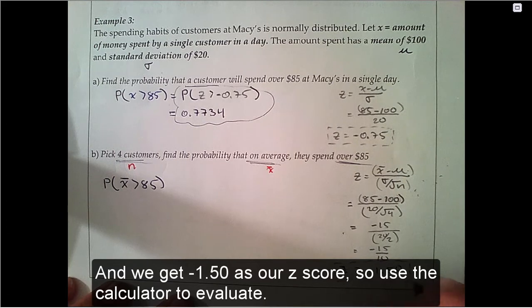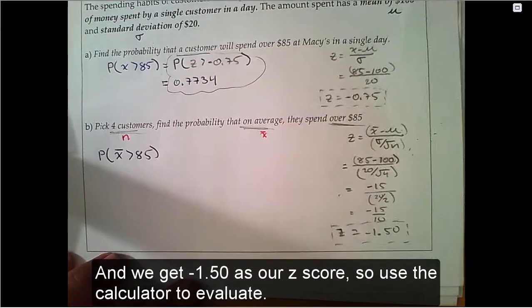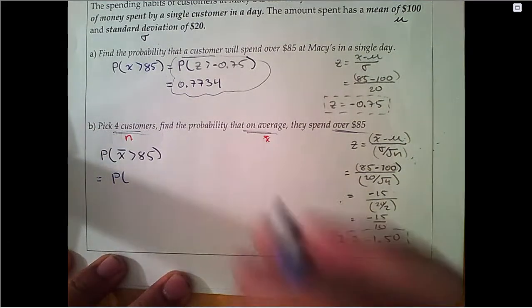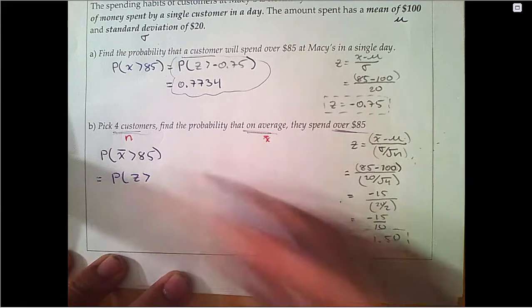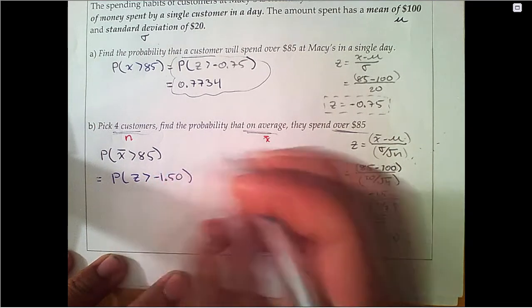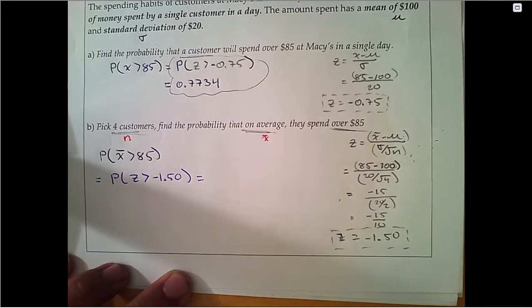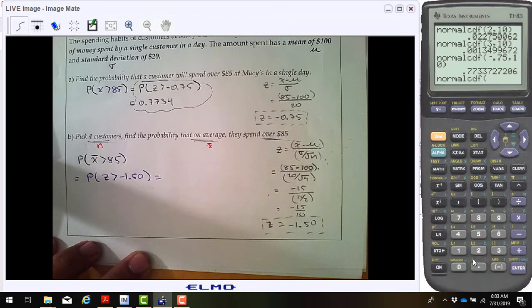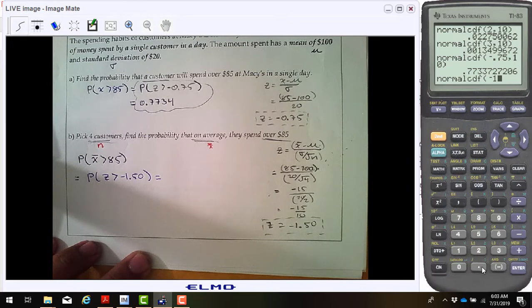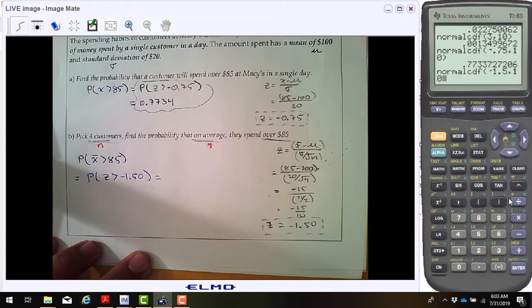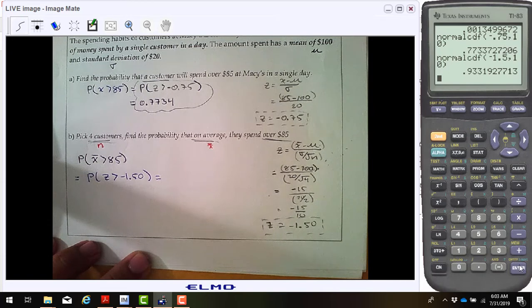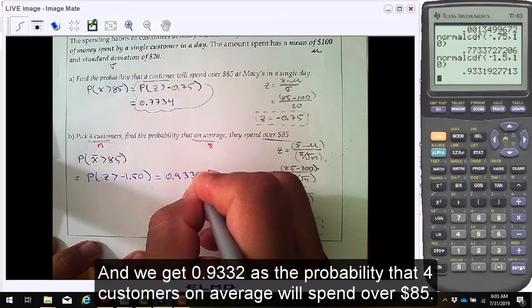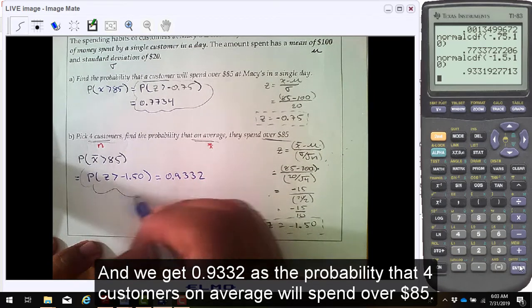And we get negative 1.50 as our z-score, so use the calculator to evaluate. And we get 0.9332 as the probability that 4 customers on average will spend over $85.